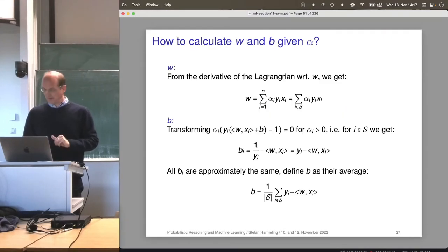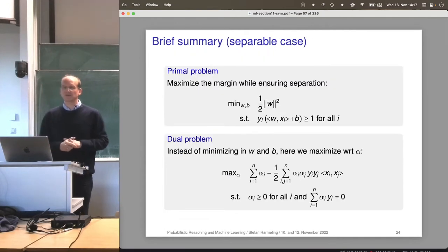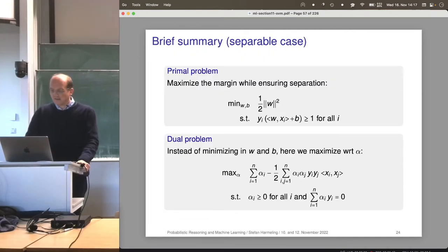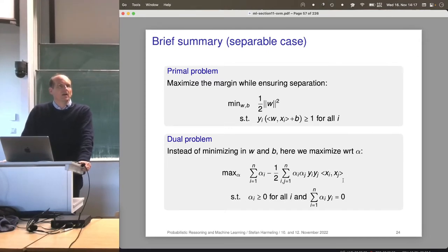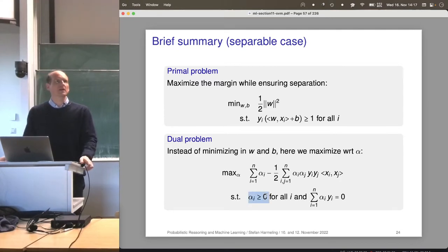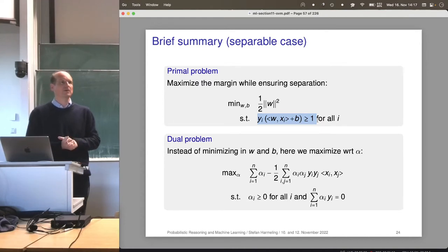Last time, we derived a primal problem for the separable case and also a dual problem for the separable case. Up until now, the dual problem is just curious — you can have two different optimization problems. An advantage might be that the constraints are simpler. But it depends on your solver whether the primal problem is better or the dual problem.